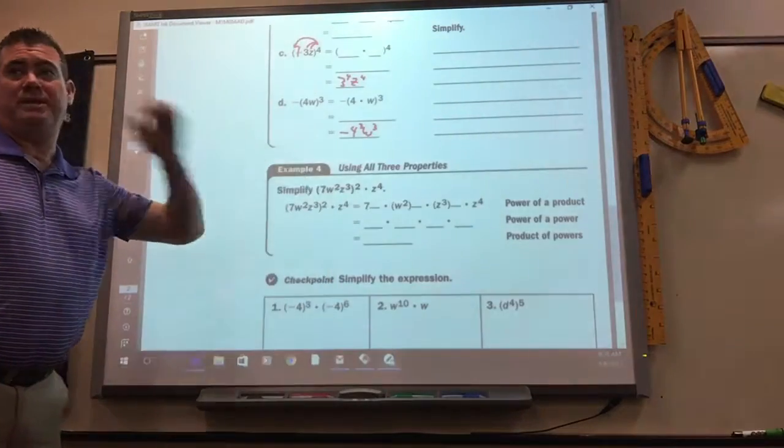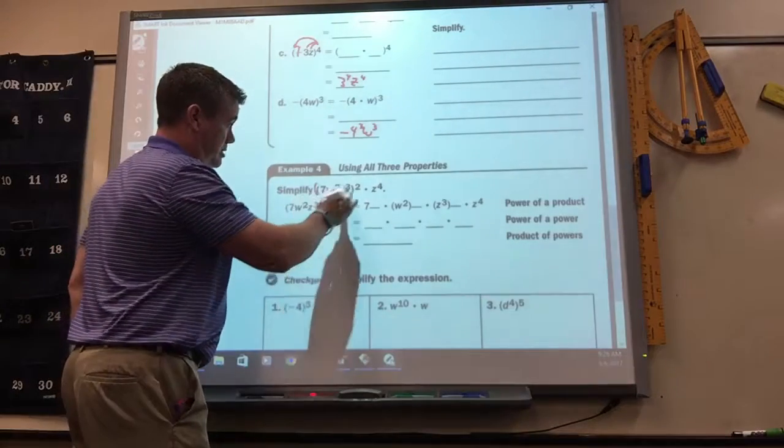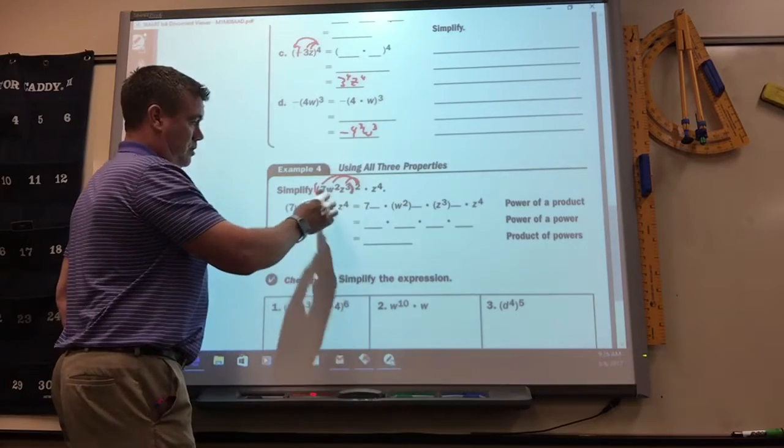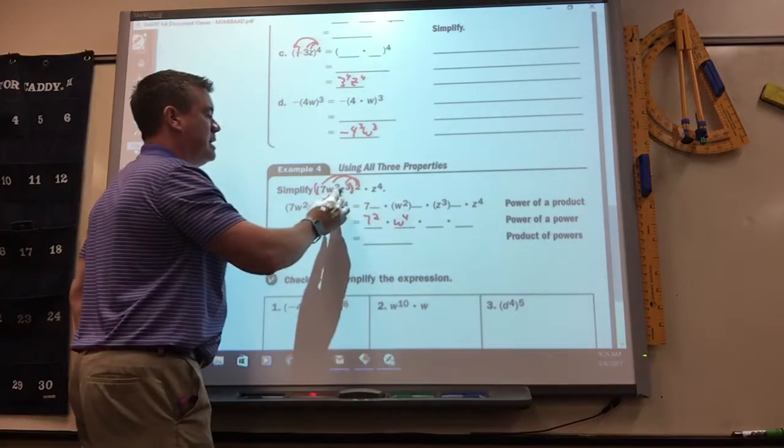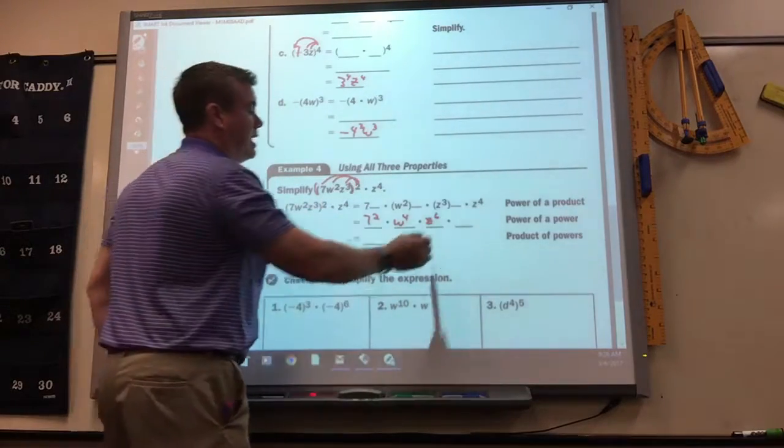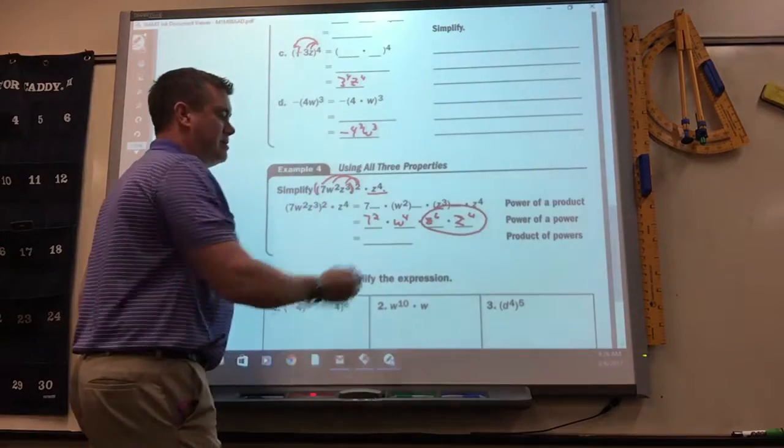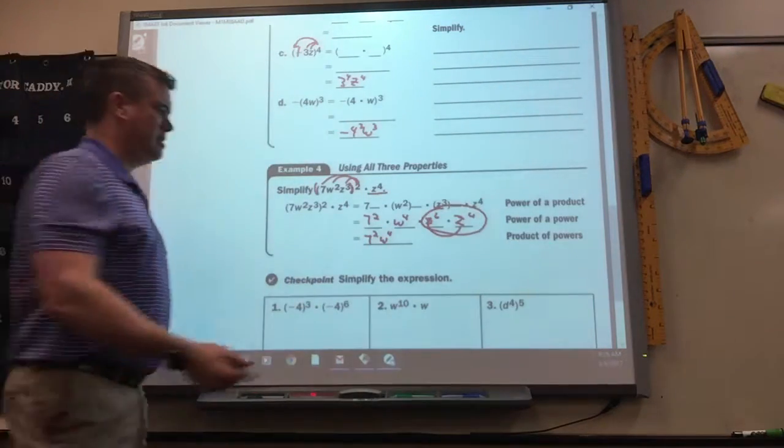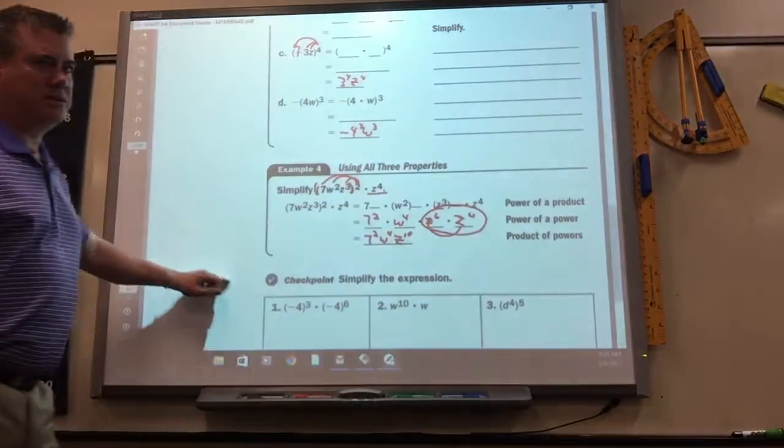So here's the little bit longer ones that we didn't do on the last assignment. And it's the same rule. This whole parenthesis is being raised to the 2nd, so you got to do all of these to the 2nd. So it would be 7 squared, w squared squared is w to the 4th, z cubed squared is z to the 6th. Because remember, you multiply it. And then there's another z to the 4th. Which, these two have the same letter. So z to the 6th and z to the 4th makes z to the 10th. So it's really the same stuff we did, except with some of these longer ones in there today.